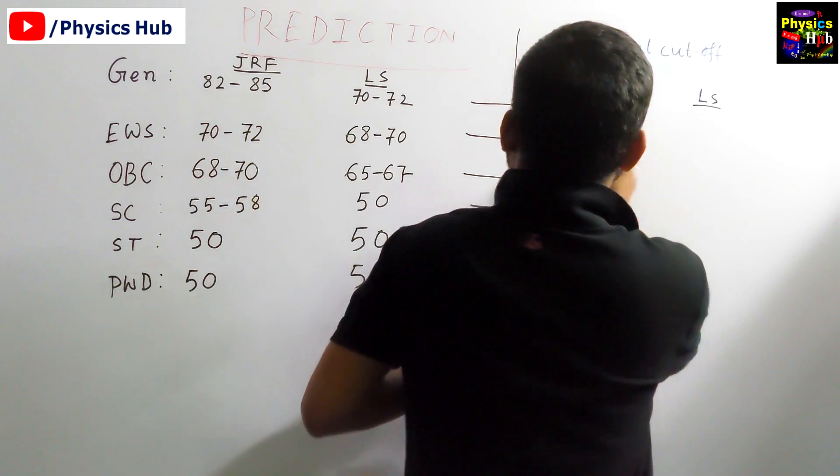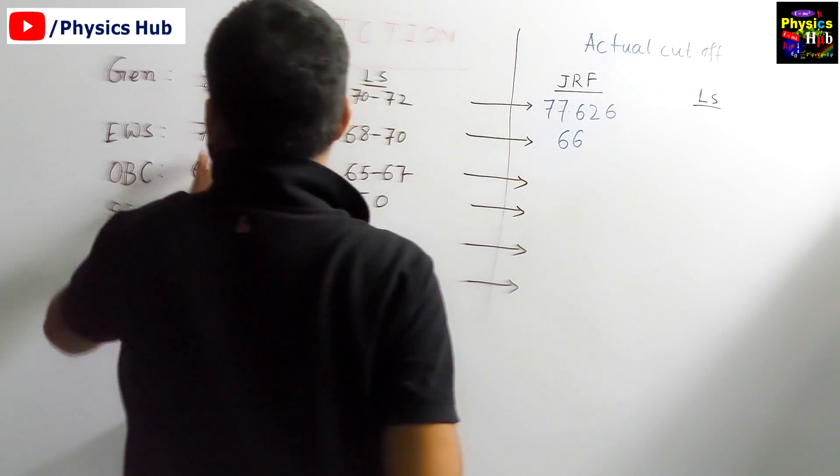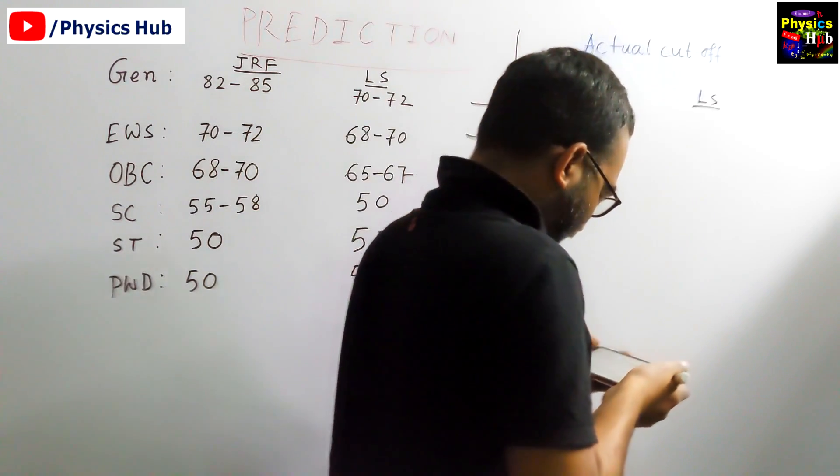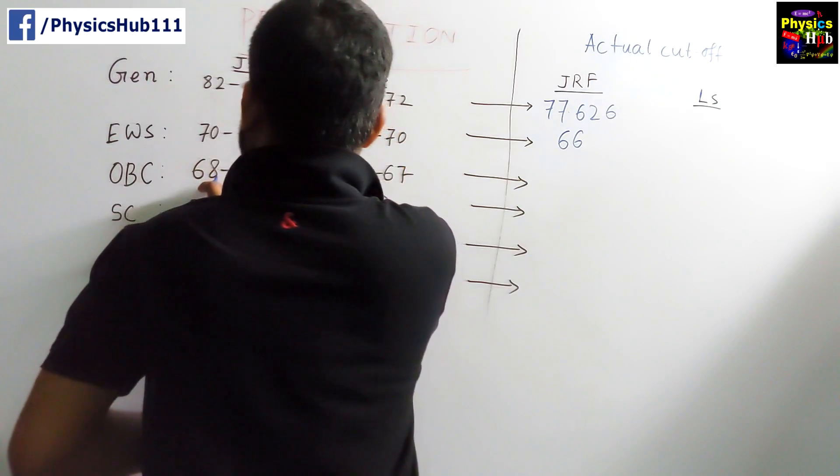EWS is 66. We predicted 70 to 72, so almost very similar. OBC 66. We predicted 68.